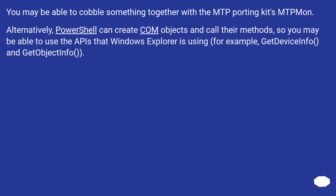You may be able to cobble something together with the MTP porting kits. Alternatively, PowerShell can create COM objects and call their methods, so you may be able to use the APIs that Windows Explorer is using, for example GetDeviceInfo and GetObjectInfo.